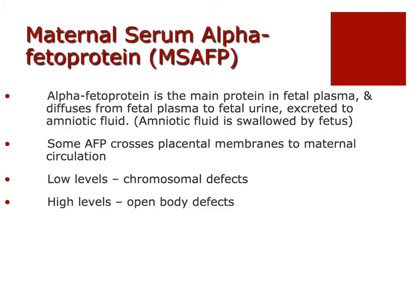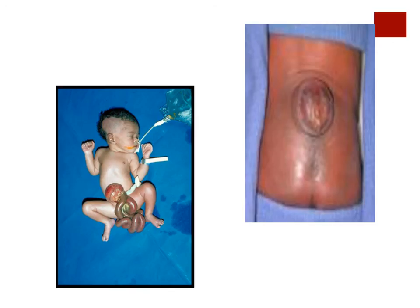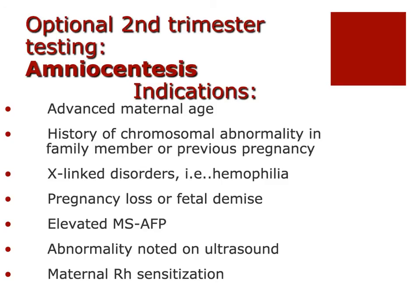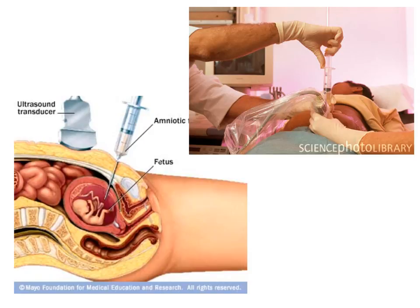The second trimester diagnostic test is an amniocentesis. Women who've had abnormal screening tests — either the NT scan or quad screen — will be offered an amniocentesis. Women who are over 35 or have family histories of genetic disorders will also be offered this diagnostic test. How is it done? Again under ultrasound guidance, and this time amniotic fluid is what's being removed and sent to the lab for analysis.